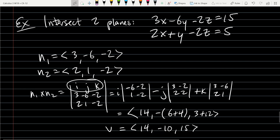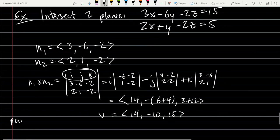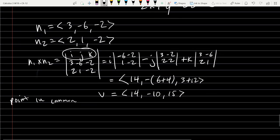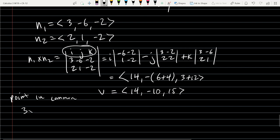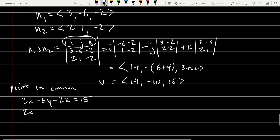So we're going to go back up to the original two equations and find our point in common. We'll rewrite them: 3x minus 6y minus 2z equals 15, and 2x plus y minus 2z equals 5.